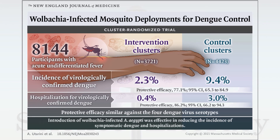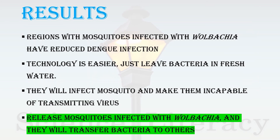This is quite exciting — a procedure that does not disturb the environment by avoiding toxic chemical mosquito killers. In summary, regions with mosquitoes infected with Wolbachia have reduced dengue infection.